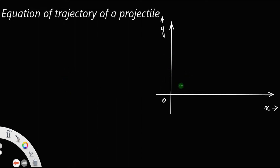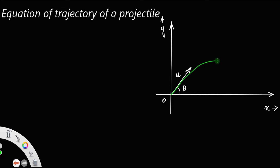Let us consider a projectile projected from the surface of the earth. Let u be its initial velocity and theta be the angle of projection. Using this green color, I am just representing the path covered by the projectile, or the trajectory of the projectile.